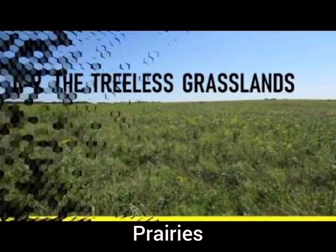In this class we will discuss about prairies. Prairies are ecosystems considered part of the temperate grasslands, savannas and shrublands biome by ecologists, based on similar temperate climates, moderate rainfall and composition of grasses, herbs and shrubs, rather than trees, as the dominant vegetation type.